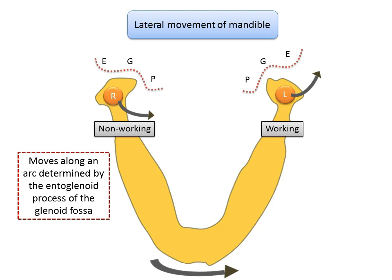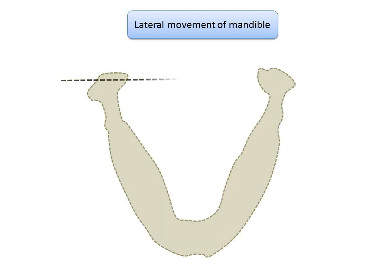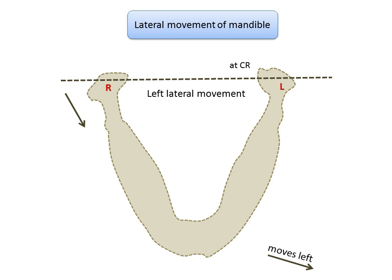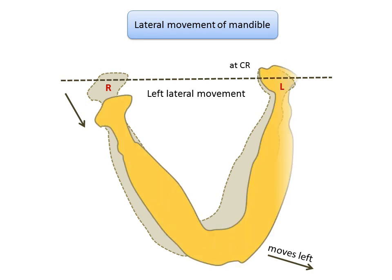Now let's take a closer look at the non-working condyle. In a left lateral movement, the left condyle is at centric relation and is just rotating, whereas the non-working right condyle is translating. Translation is defined as a movement in which every point of the moving object has simultaneously the same velocity and direction — meaning the right condyle is moving en masse, as a whole. This is termed lateral translation.